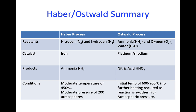That is the Ostwald summary in a nutshell. Before we move on, let's do a quick comparison of the Haber and Ostwald processes. In the Haber process, our reactants are nitrogen and hydrogen, our catalyst is iron, and our product is ammonia. The Haber process requires a moderate temperature of 450 degrees C and a moderate pressure of 200 atmospheres. The Ostwald process involves ammonia, oxygen, and water as reactants; we can use either a platinum or rhodium catalyst and it produces nitric acid. It requires an initial temperature of between 600 and 900 degrees but doesn't require heating throughout because it's exothermic, and we can carry out the process at atmospheric pressure.